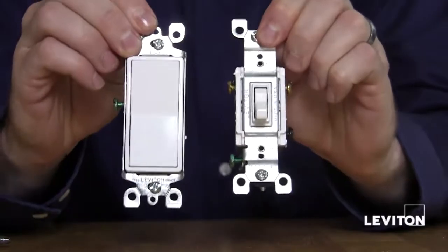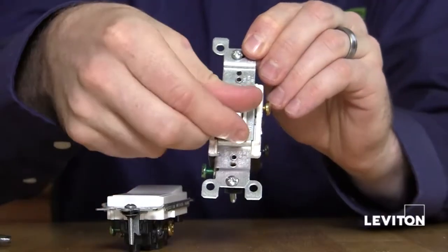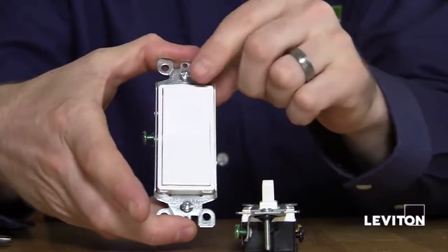Here are two examples of a three-way switch. One is a toggle and the other is a decora style.